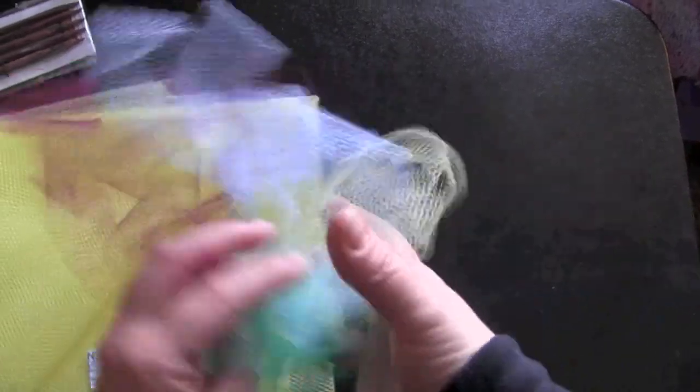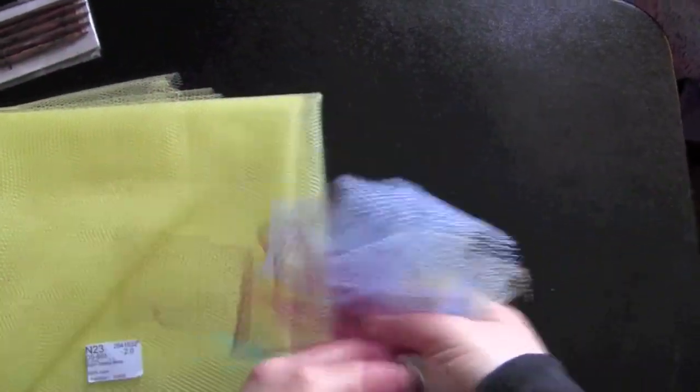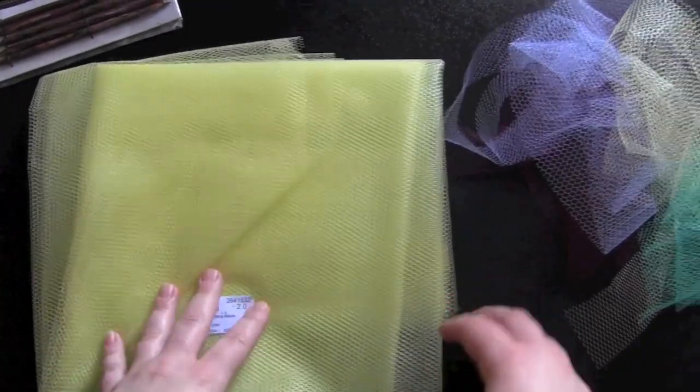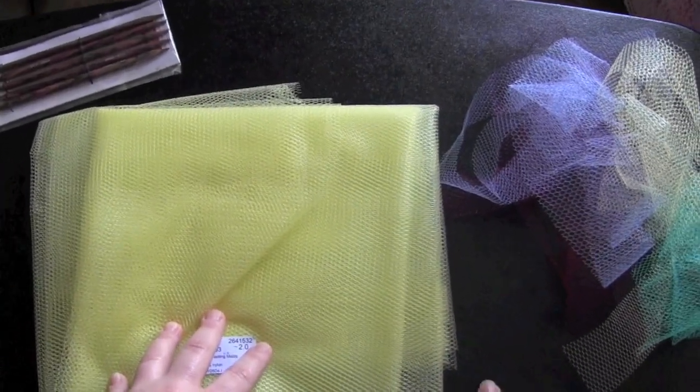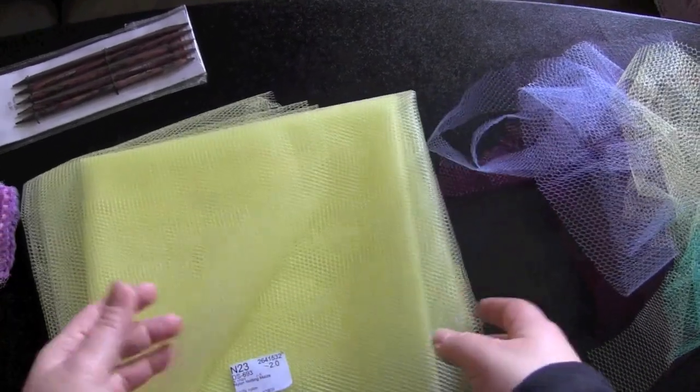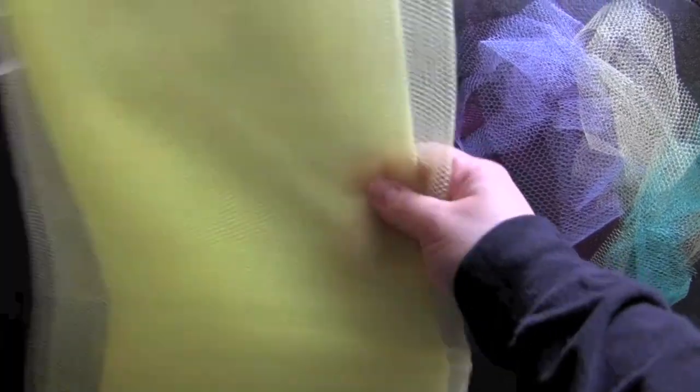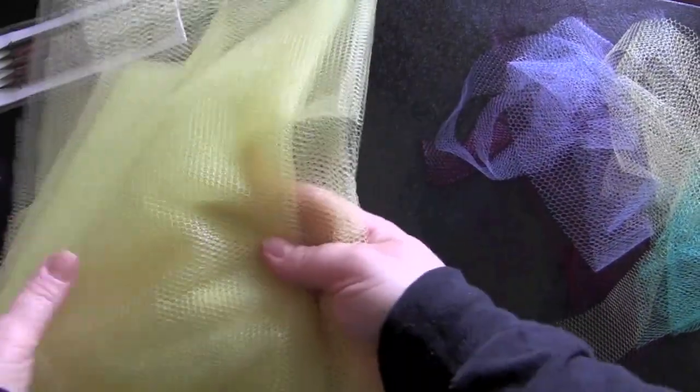So here are the colors that I will be using for my scrubby today. My netting came to me like this. You might get it in a roll or still on the cardboard bolt from the fabric store. What I did with mine, I just opened it up and then cut straight up strips.